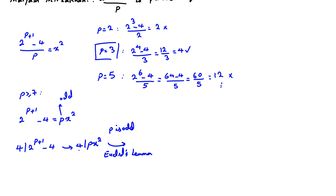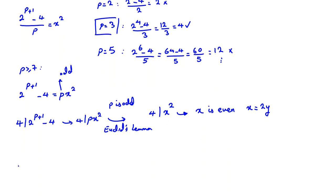By Euclid's lemma — when something divides a product of two things and is relatively prime to one of them — since 4 and p are relatively prime, we conclude 4 divides x², so x is even. We write x = 2y, so 2^(p+1) - 4 = p(2y)² = 4py². Dividing both sides by 4 gives 2^(p-1) - 1 = py².